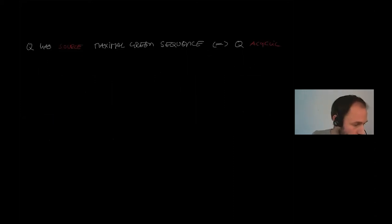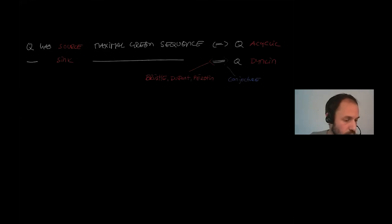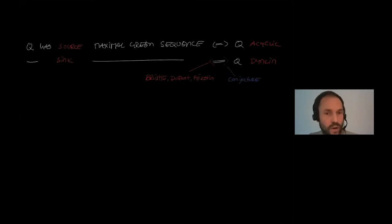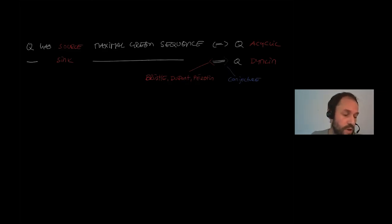Now the question is how to find these source and sink maximal green sequences, or when do we have them. A source maximal green sequence is equivalent to the quiver being acyclic. For a sink maximal green sequence, we know that if the quiver is Dynkin of type A, D, or E then such a sink maximal green sequence exists, due to a result of Brüstle, Dupont, and Pérotin. We conjecture this is an equivalence, which would mean this construction works exactly for triangle products of acyclic quivers with Dynkin quivers.